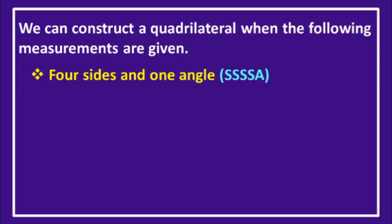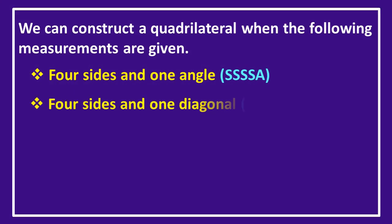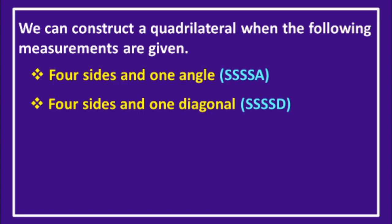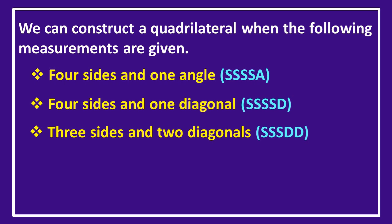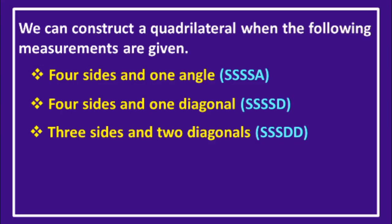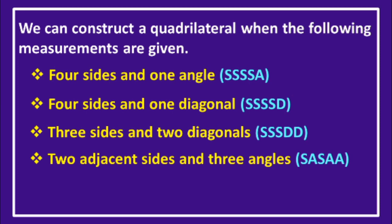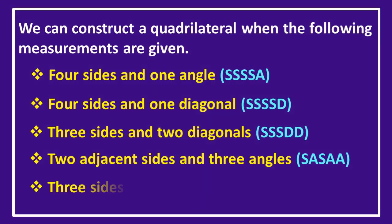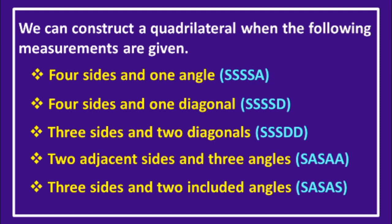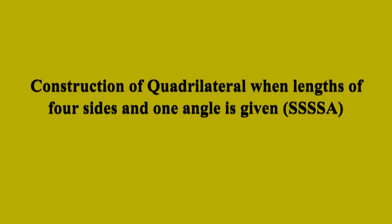So first, 4 sides and 1 angle — that means if you know 4 sides and an angle, you can construct a quadrilateral. Or if you know 4 sides and 1 diagonal, then also you can construct a quadrilateral. The next one is 3 sides and 2 diagonals. Then 2 adjacent sides and 3 angles. And last one is 3 sides and 2 included angles. So if you know any one of these, you can construct a quadrilateral.